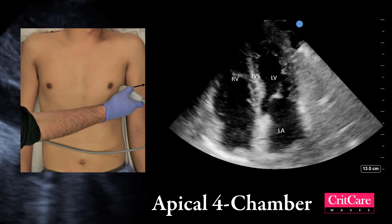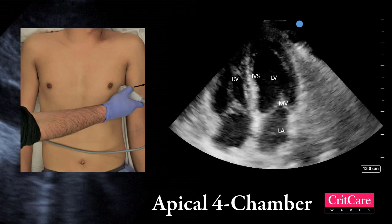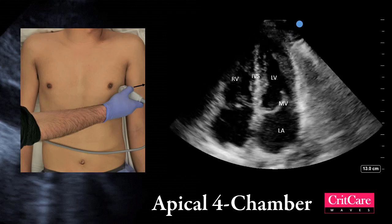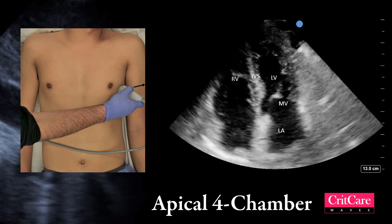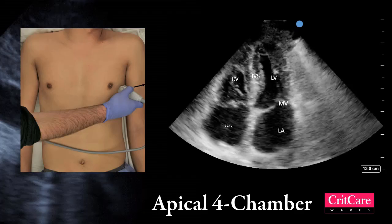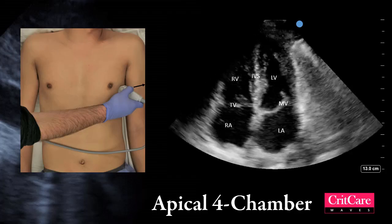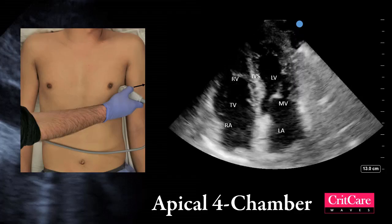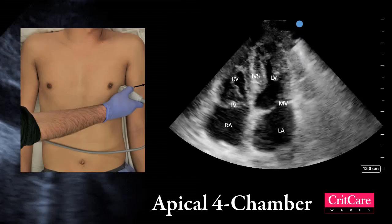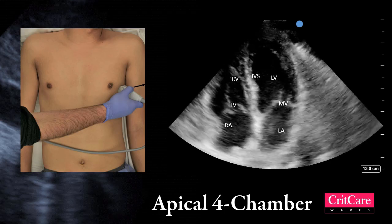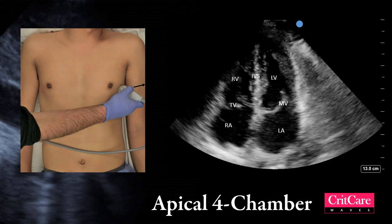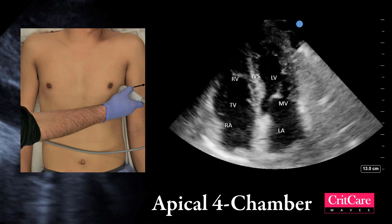Here is the left atrium and the mitral valve between the left atrium and ventricle. The right atrium is adjacent to the left atrium, and the tricuspid valve is between the right atrium and ventricle.